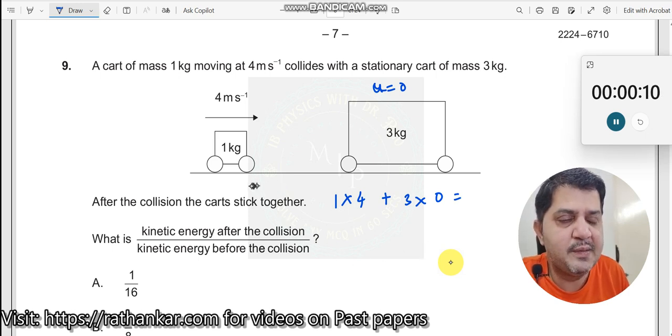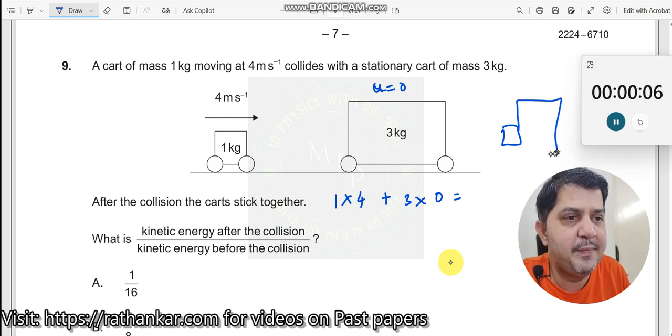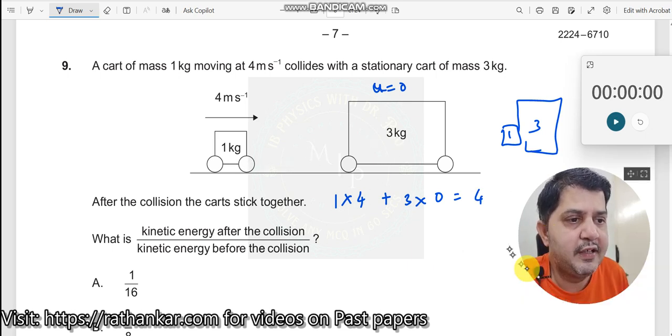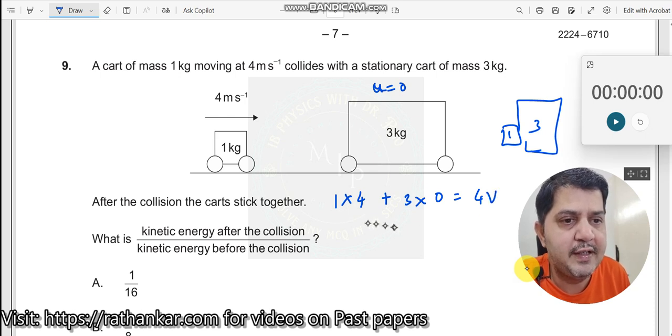The momentum after collision. Both carts are joined together, so the total mass is 1 + 3 = 4, multiplied by the final velocity v. So 4 = 4v, therefore v equals 1 meter per second.